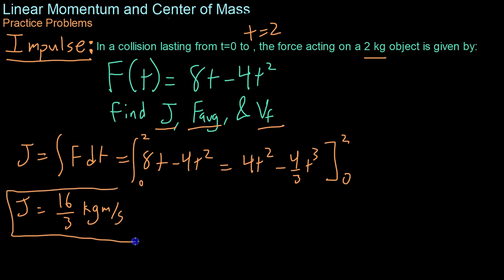Now that comes out to be 4t squared minus 4 over thirds t cubed from 2 to 0, or j equals 16 thirds kilogram meters per second. Basically, we have 5 and a third kilogram meters per second.